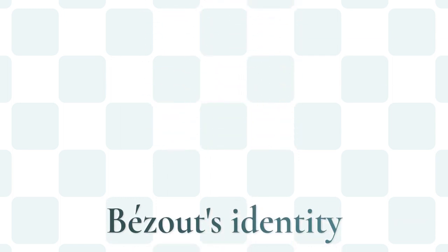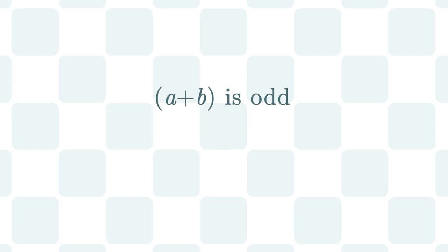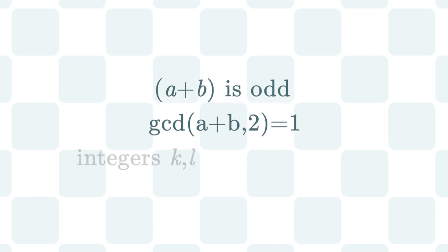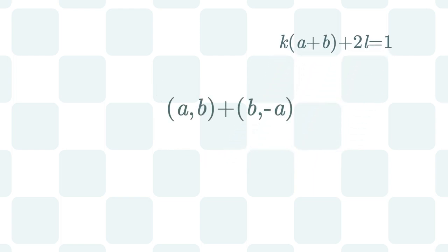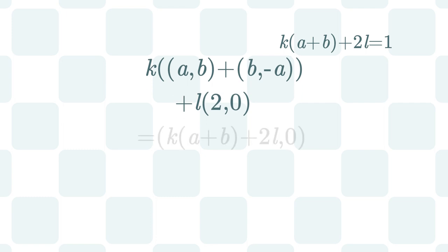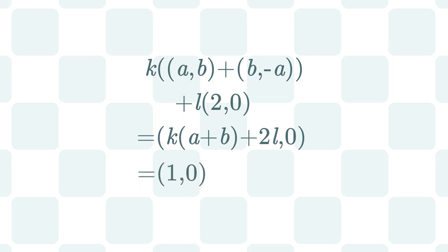We are almost there. We just need to use the Bezout's identity once again. Since a plus b is odd, we have that greatest common divisor of a plus b and 2 is equal to 1. So there exist integers k and l such that k times (a plus b) plus 2l is equal to 1. Now we let our a,b Knight do a,b and b minus a moves k times and also do the 2,0 move l times. By adding these moves together we acquire a k times (a plus b) plus 2l, 0 move, which by the definition of k and l is just a 1,0 move.